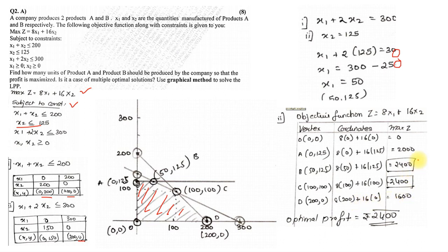Now the maximum value among these, the max is 2400. So we'll write optimal profit is rupees 2400 at point B and C having coordinates 50,125 or 100,100. So this was the sum which had multiple optimal solutions. This is how you all had to solve question number 2A which was based on graphical method of LPP.